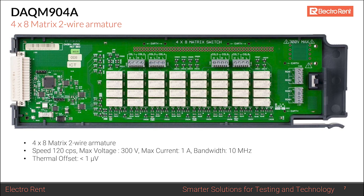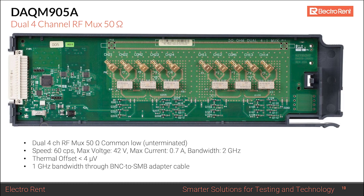The DAQM905A is a dual four-channel RF multiplexer for RF switching. Each of the two channels can be multiplexed to four different destinations. It's 50 ohms with a bandwidth of 2 GHz, suitable for most low-level RF signals. However, this card does not come in 75 ohms, so for 75-ohm applications you may need to go back to the 34972 or the larger 34980, which supports 75-ohm RF switching.